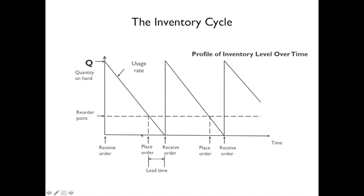Here's a profile of inventory over time: you order it, it comes in, you receive the inventory, it comes down to the reorder point, and you order again. So you're always ordering at that reorder point.